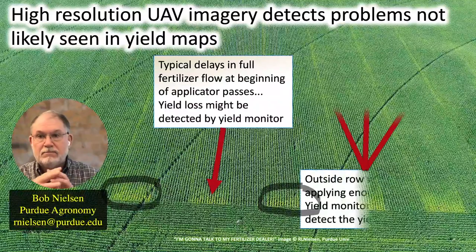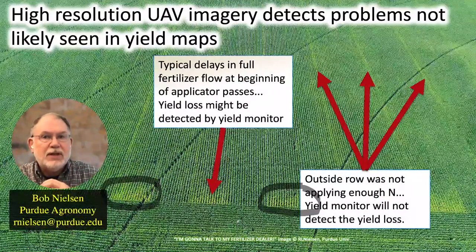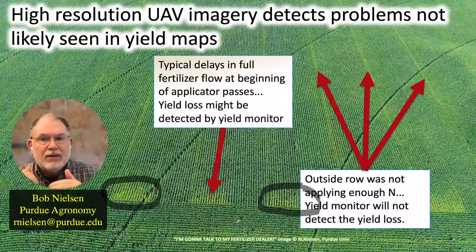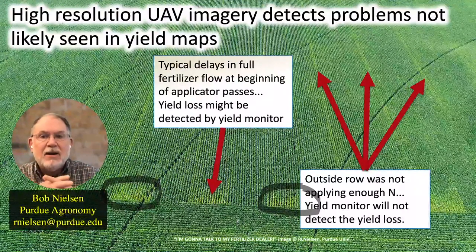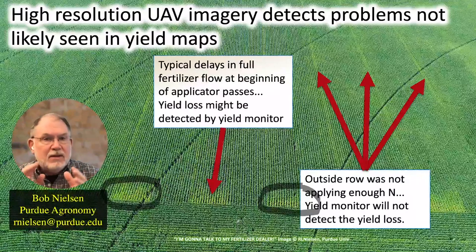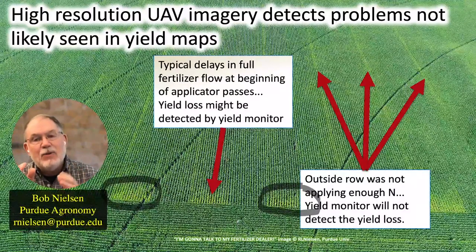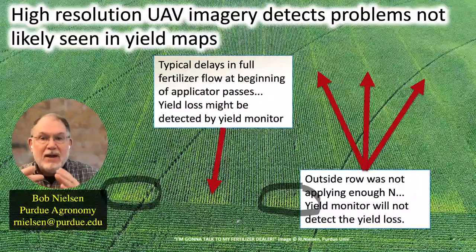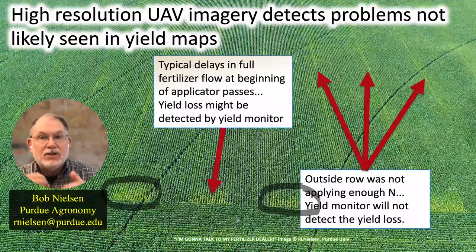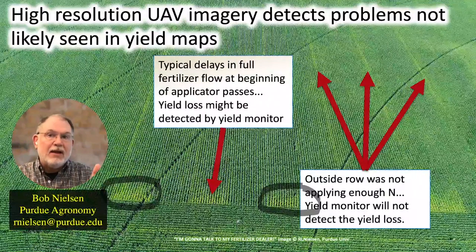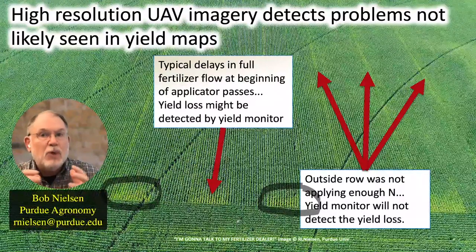But the other thing in this photo — maybe not as visually impressive but nevertheless representing potential for lost yield — are these individual rows showing nitrogen-deficient symptoms going throughout the entire length of these passes. This indicates areas where the outside row of the nitrogen applicator was simply not putting on as much nitrogen as the rest of the toolbar. The high-resolution drone imagery was able to show us these individual rows with pretty dramatic nitrogen deficiency, and the severity was almost as much as at the beginning of the applicator pass. If you estimate the yield loss per acre based on just those rows, you're probably looking at 50 to 75 bushel equivalent loss per acre.